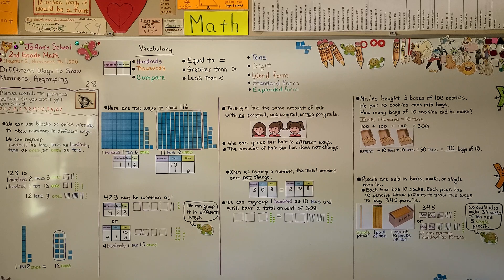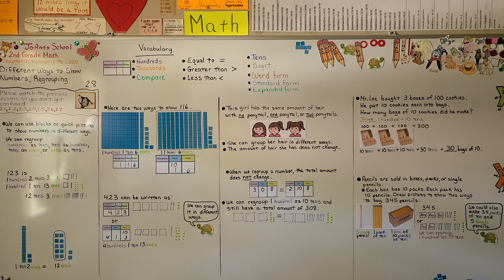So remember when regrouping, we're just taking a number from one place value and we're moving it to another place value. We're turning one hundred into ten tens or ten tens into one hundred. We use blocks or quick pictures and we can show the numbers in different ways. We can regroup them.